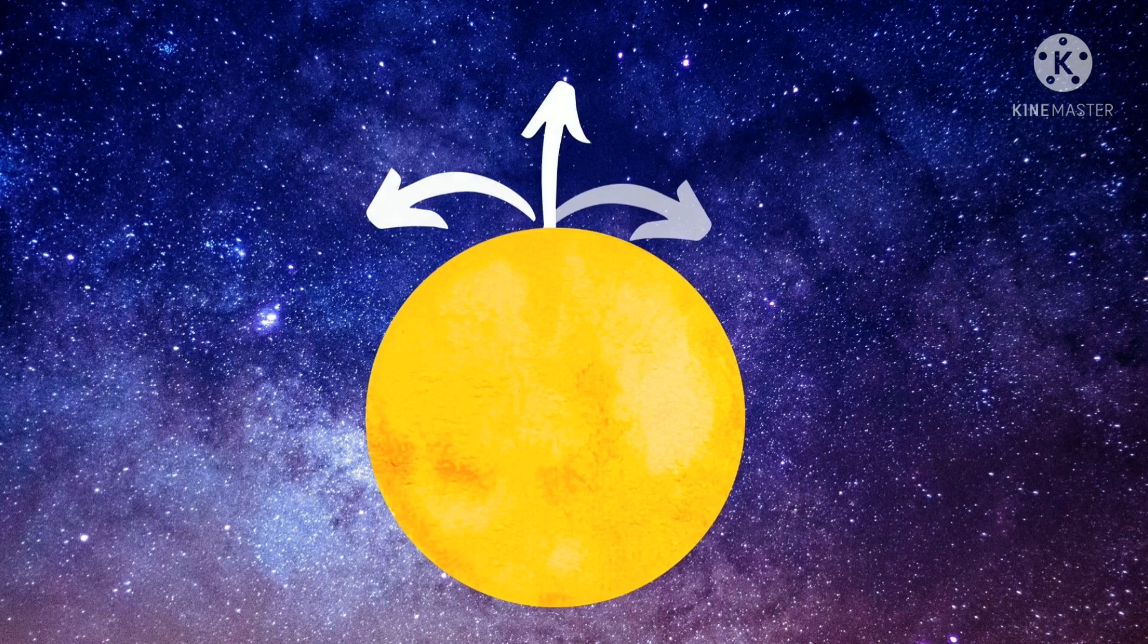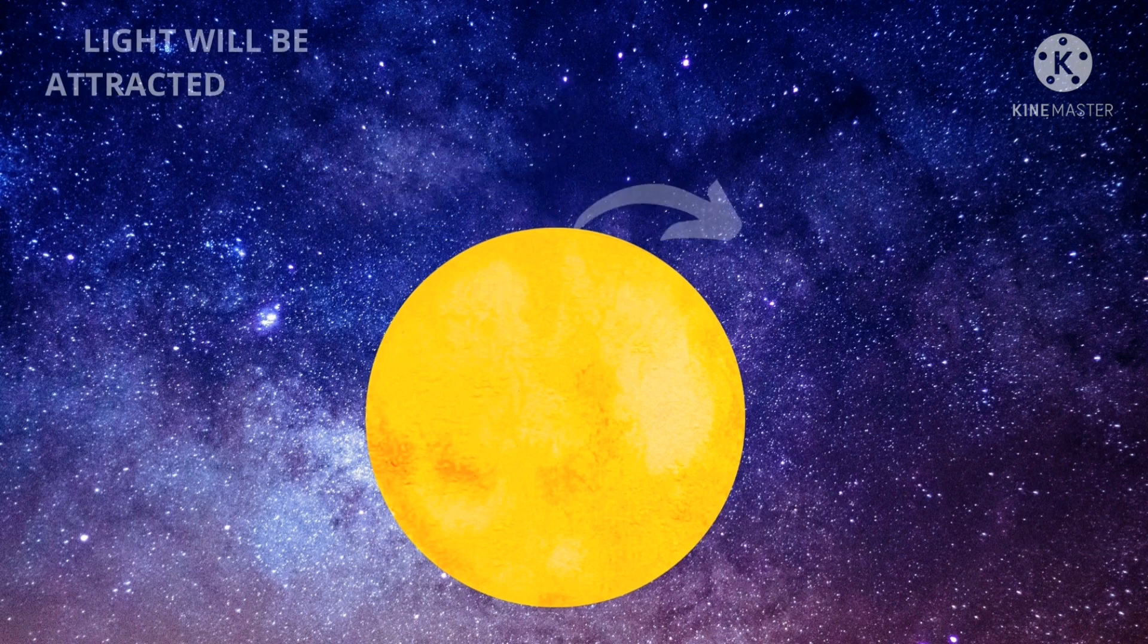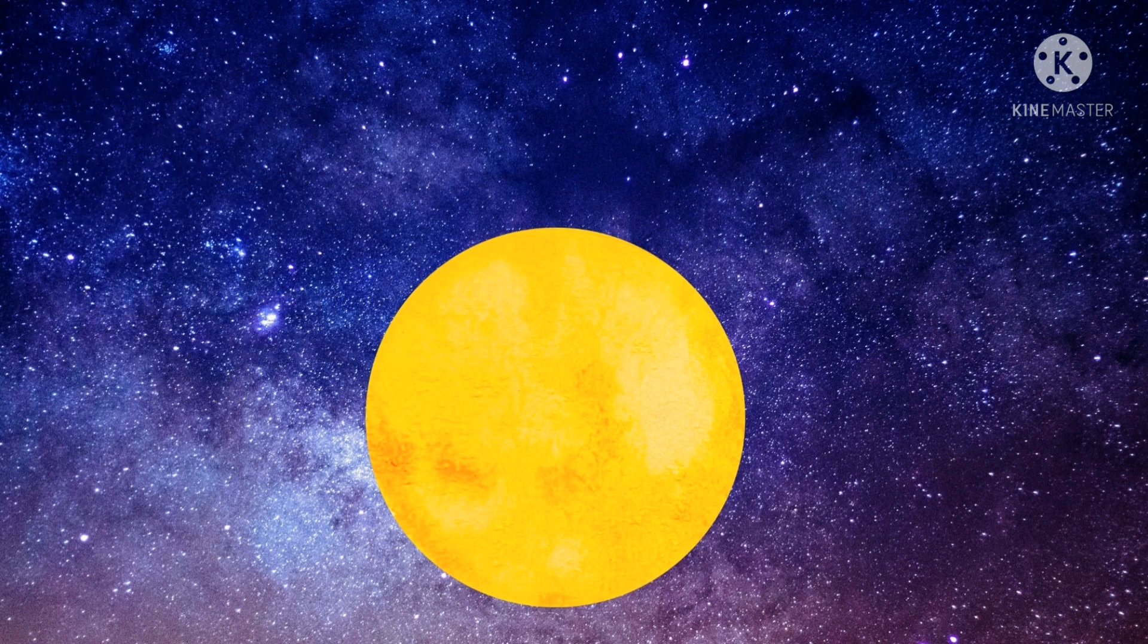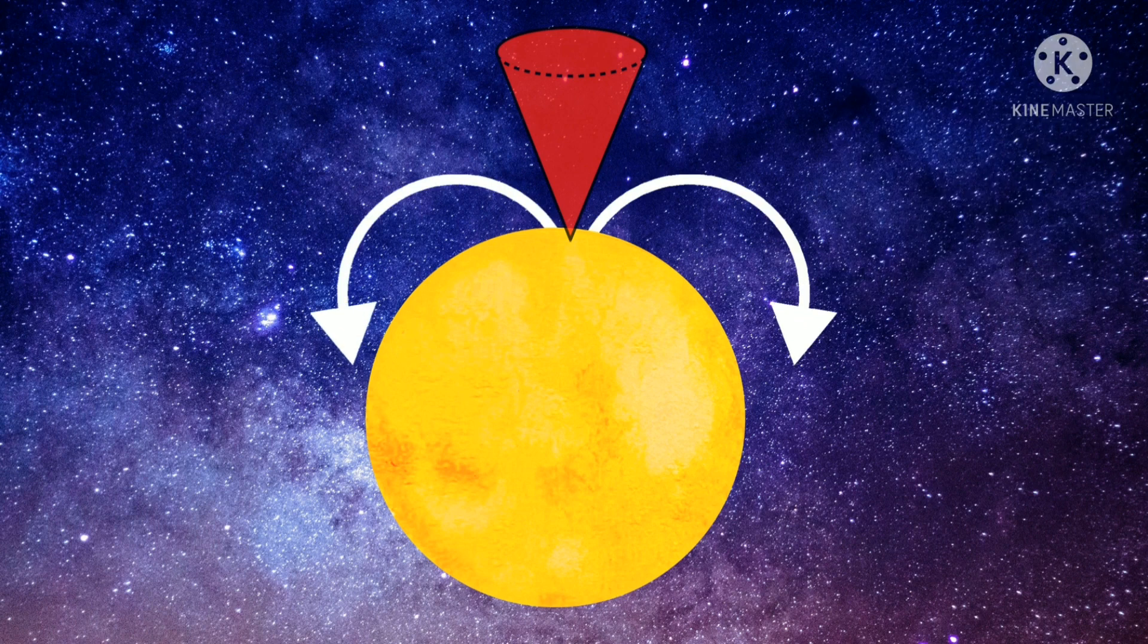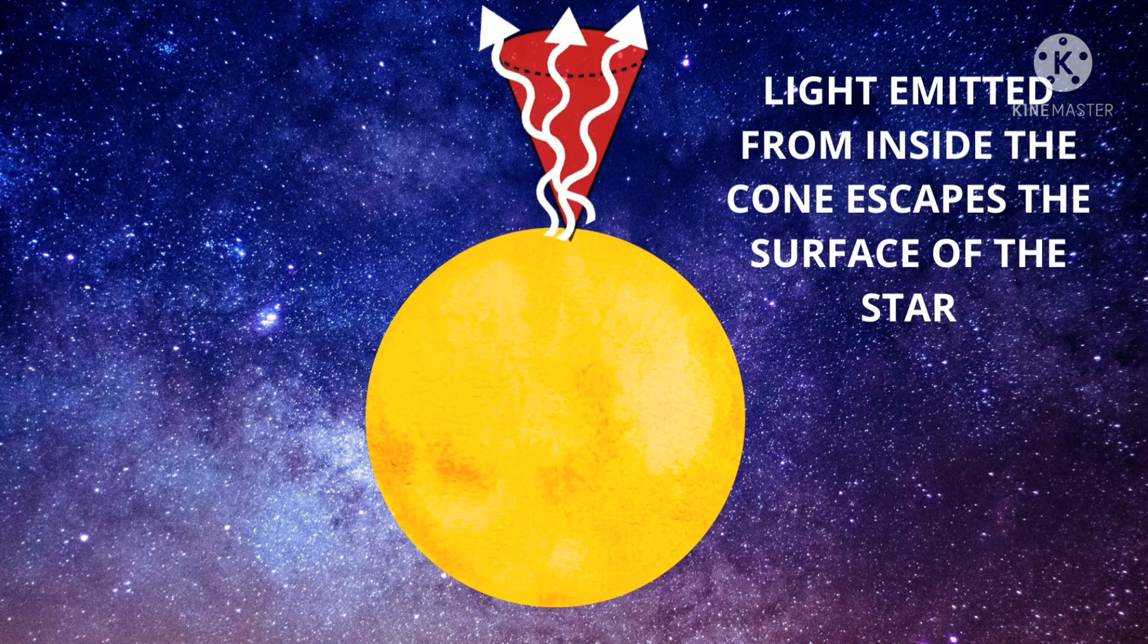Here we have a star with a point from where rays are emitted. And to let you know, light will be attracted to the mass of the star. So any light emitted outside the cone will fall back to the surface, while the light emitted inside the cone will escape from the star.